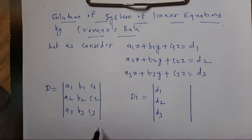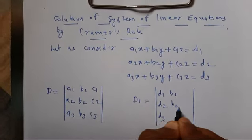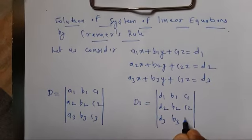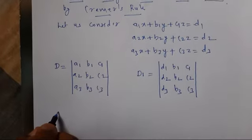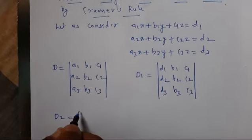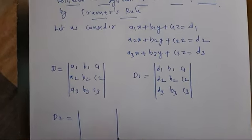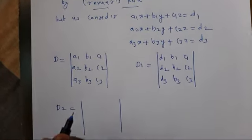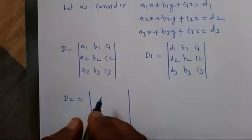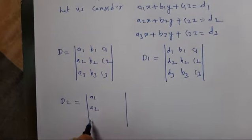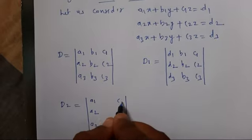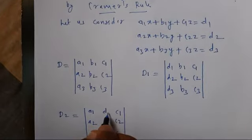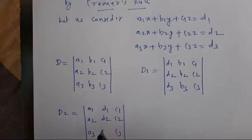The remaining two columns stay as B1 B2 B3 and C1 C2 C3. To find the value of Y, I use D2 — I replace the middle column by d1, d2, d3, keeping the remaining two columns A1 A2 A3 and C1 C2 C3 as they are.